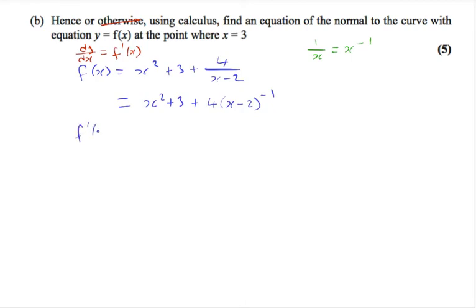So differentiating, we get 2x. 3 differentiates to give 0. To differentiate this term, minus 1 comes down and multiplies with the 4 to give a minus 4. The bracket stays the same. We subtract 1 from the power and we multiply by the derivative of what's in the bracket, which is 1.